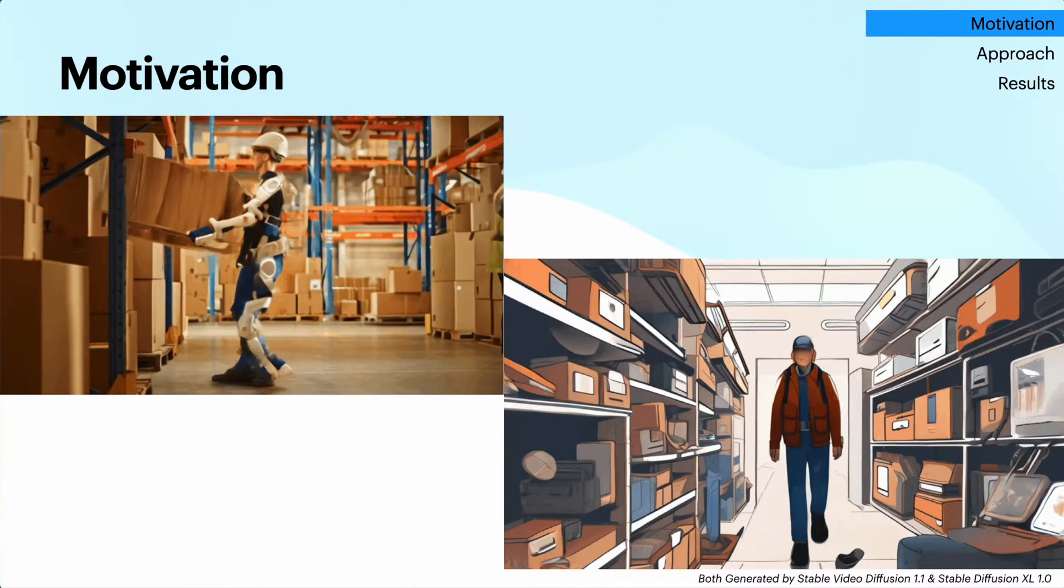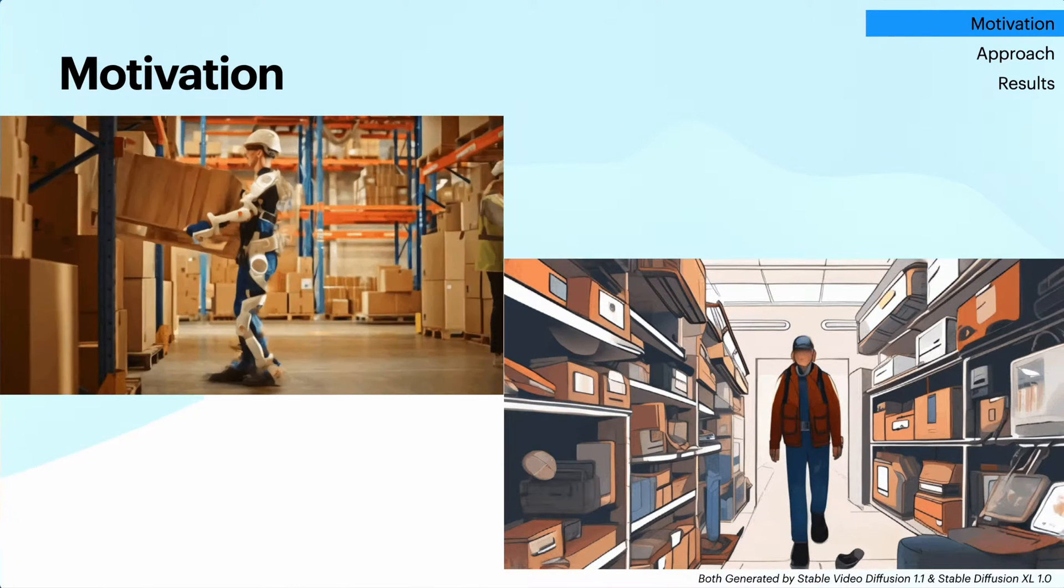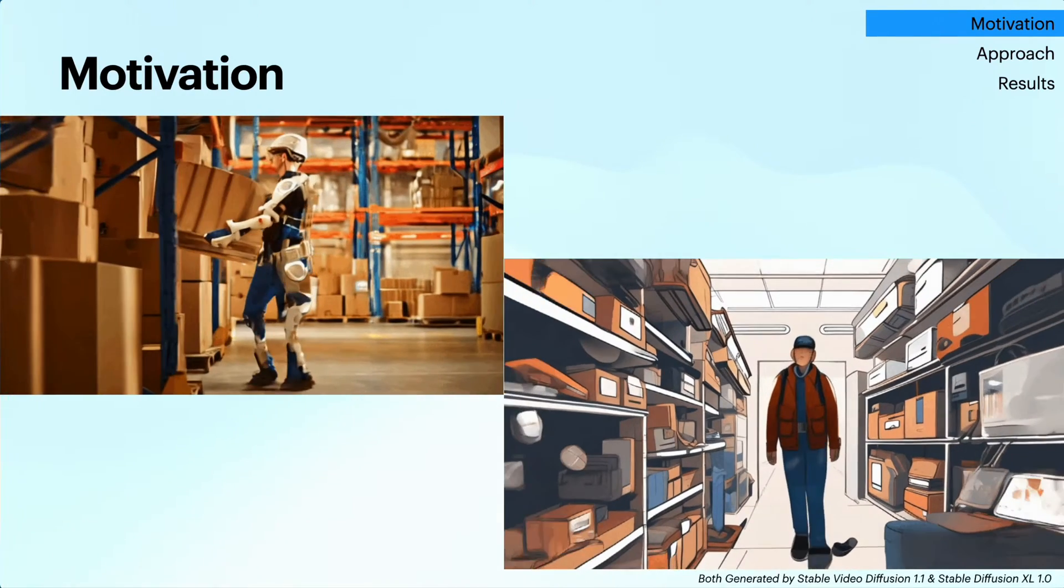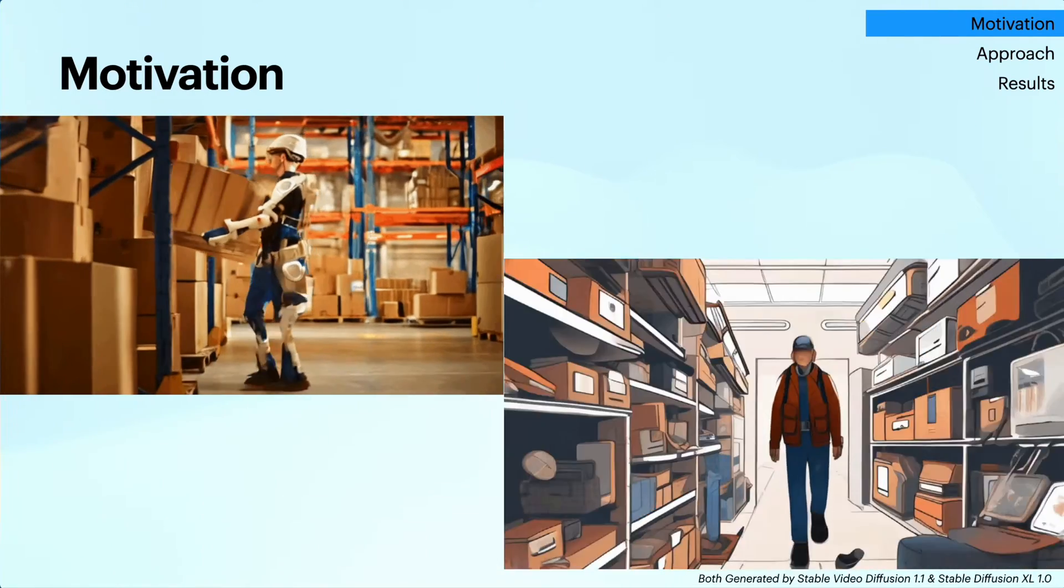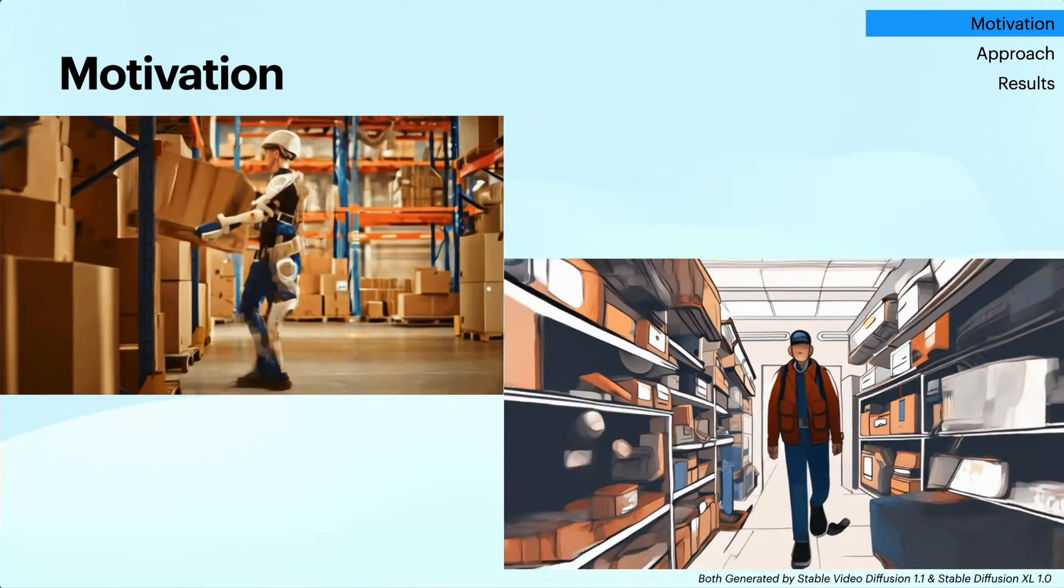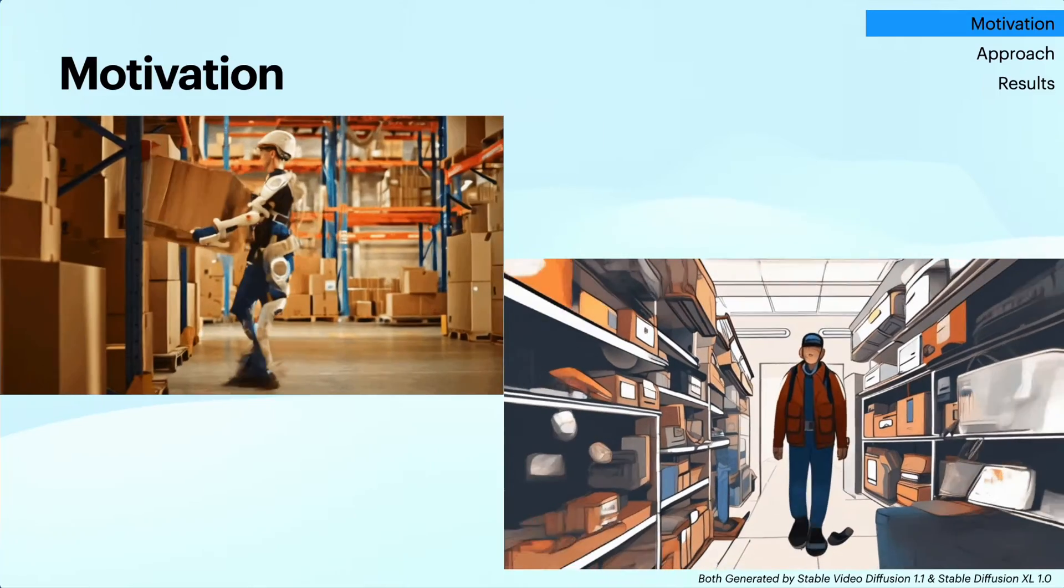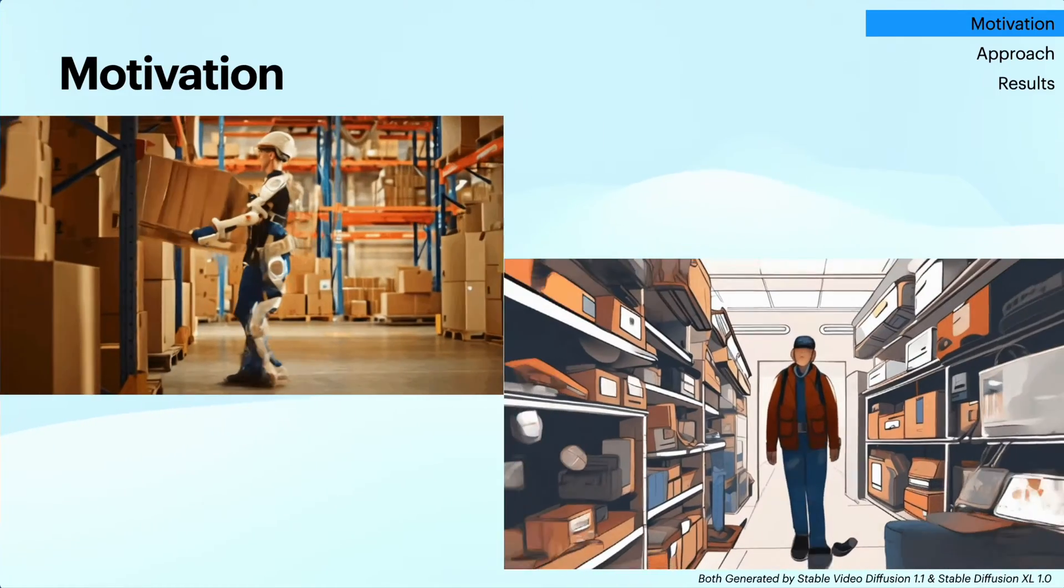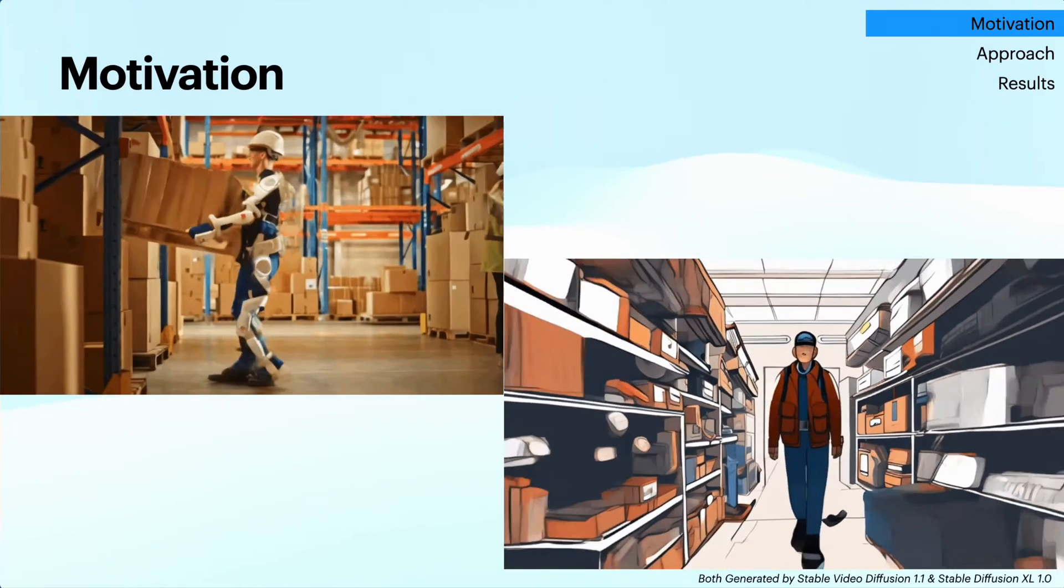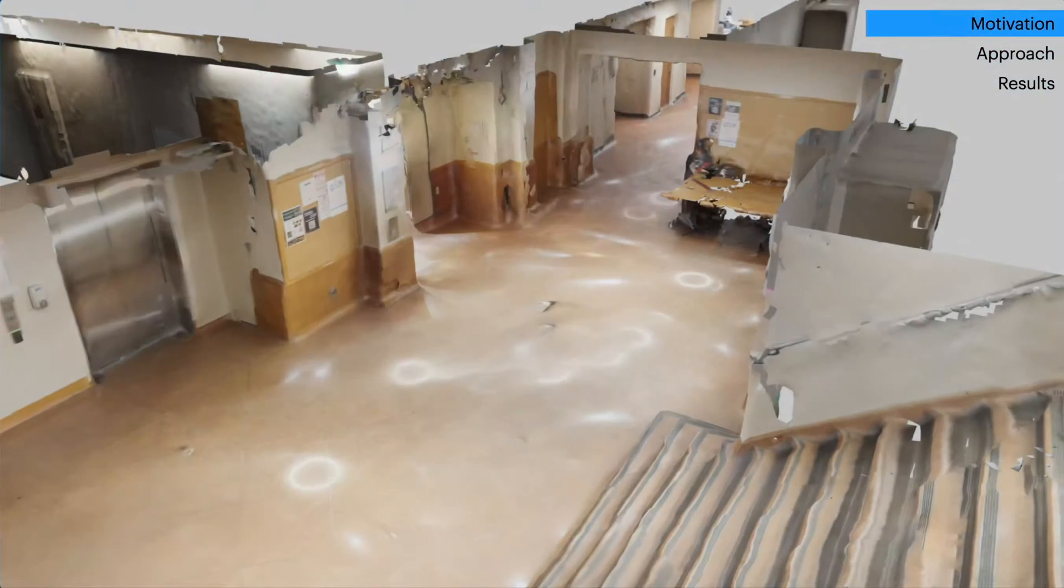Imagine a future where robots and assistive devices seamlessly integrate into human lives—be it an exoskeleton helping a worker lift heavy objects, or a smart wearable guiding a disabled person through a cluttered environment. For these systems to provide safe and helpful assistance, they need to understand the human's intentions and anticipate their movements based on the surrounding scene. This is the core challenge of egocentric human trajectory prediction.